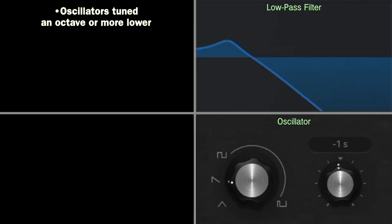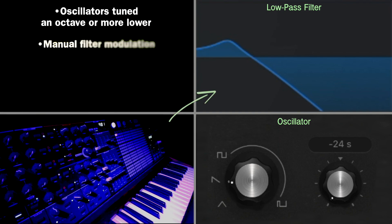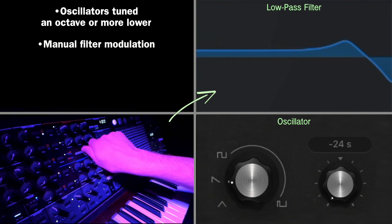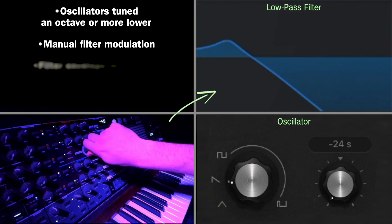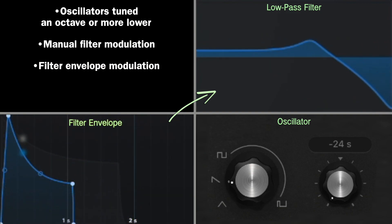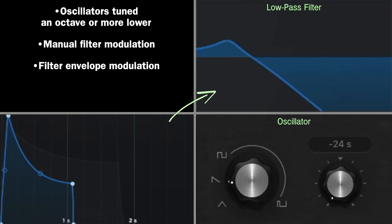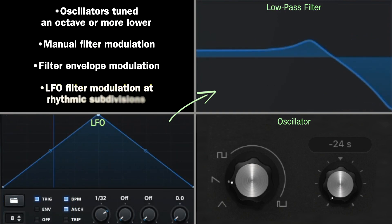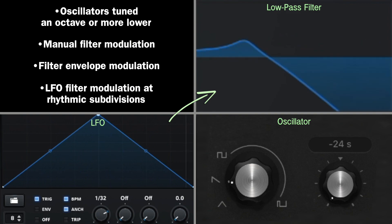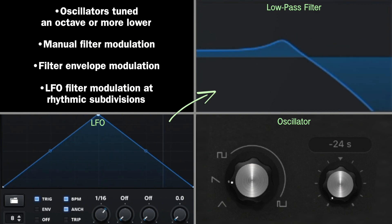A synth bass sound will generally feature oscillators tuned an octave or more lower than usual. Low-pass filter modulation is a crucial component of synth bass. Sometimes we modulate our filter manually by turning the knob with our hand. Sometimes we modulate our filter with an envelope, setting it to open with a quick or slow attack on each note. Sometimes we modulate our filter with an LFO, like in the famous wobble bass sound, which is characterized by an LFO modulating a low-pass filter at different rhythmic subdivisions.